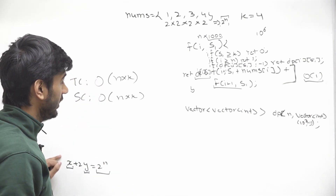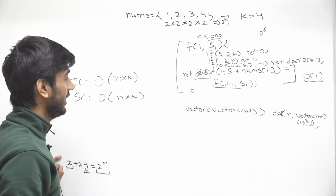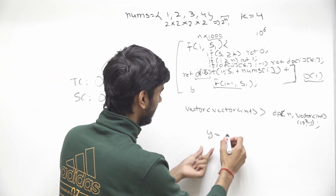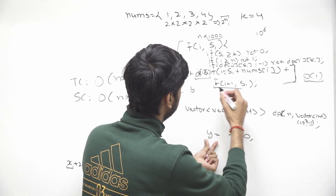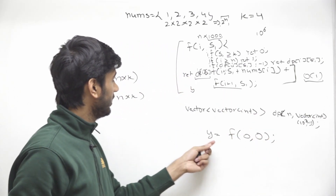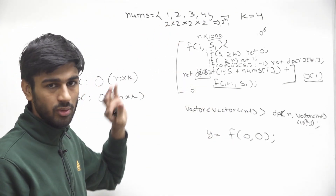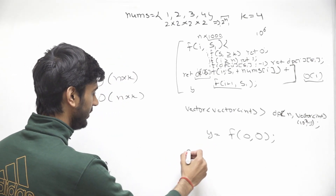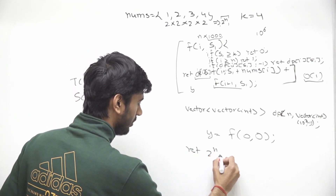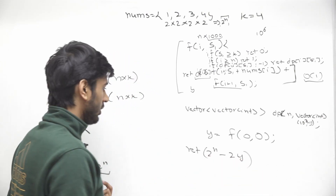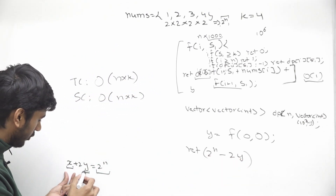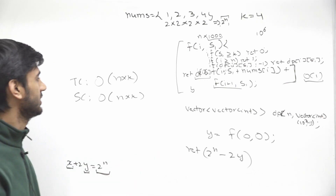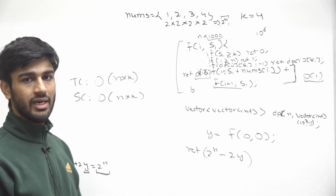Once we have y — the total number of ways in which set 1 has a sum smaller than k — we call the function starting from index 0 with sum 0. Then the final answer is 2^n − 2 × y. That's all for this video.